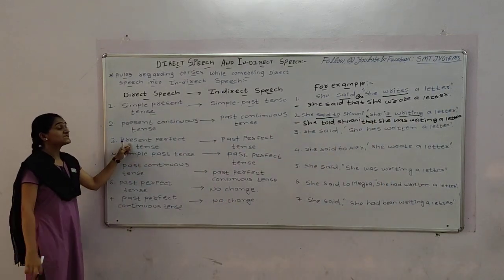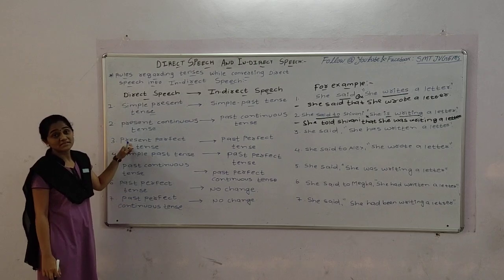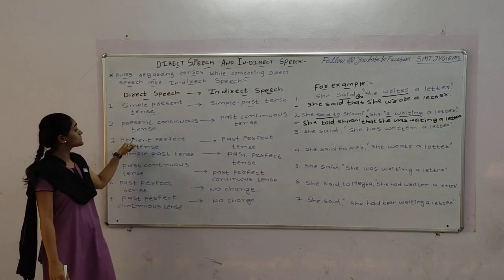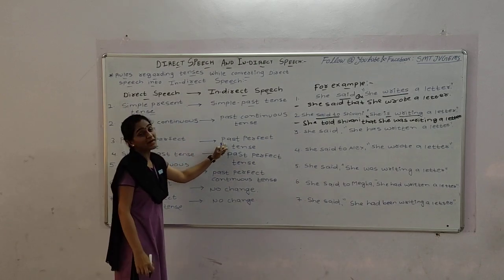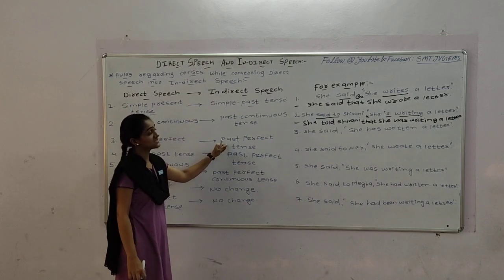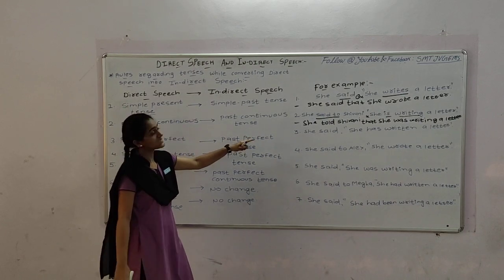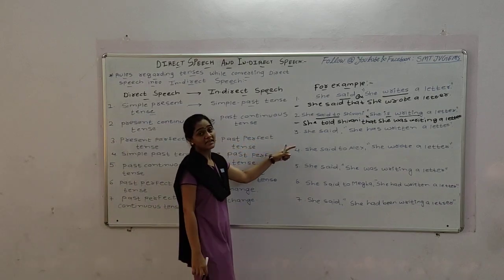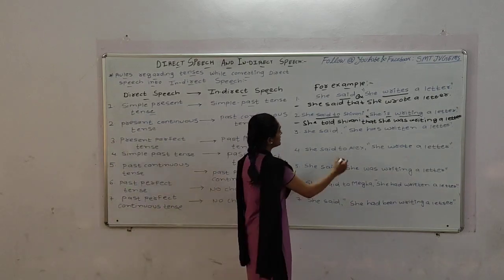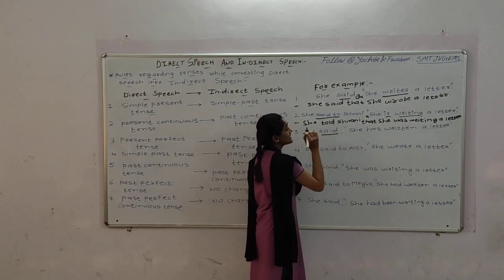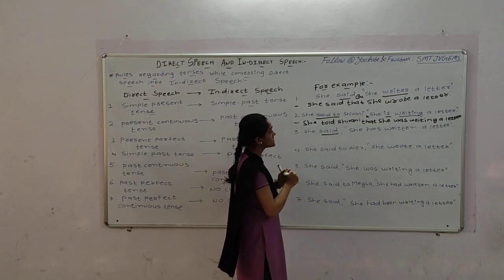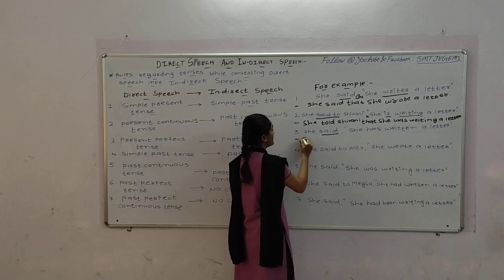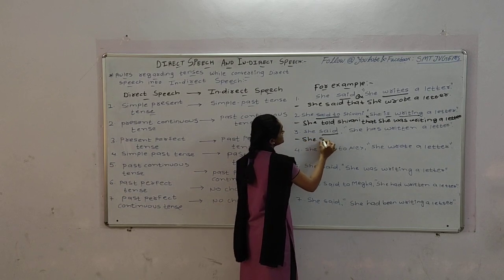The third tense is present perfect tense. Present perfect tense changes into past perfect tense. Let's see the example. Again, the reporting verb remains the same — there will be no changes in it.